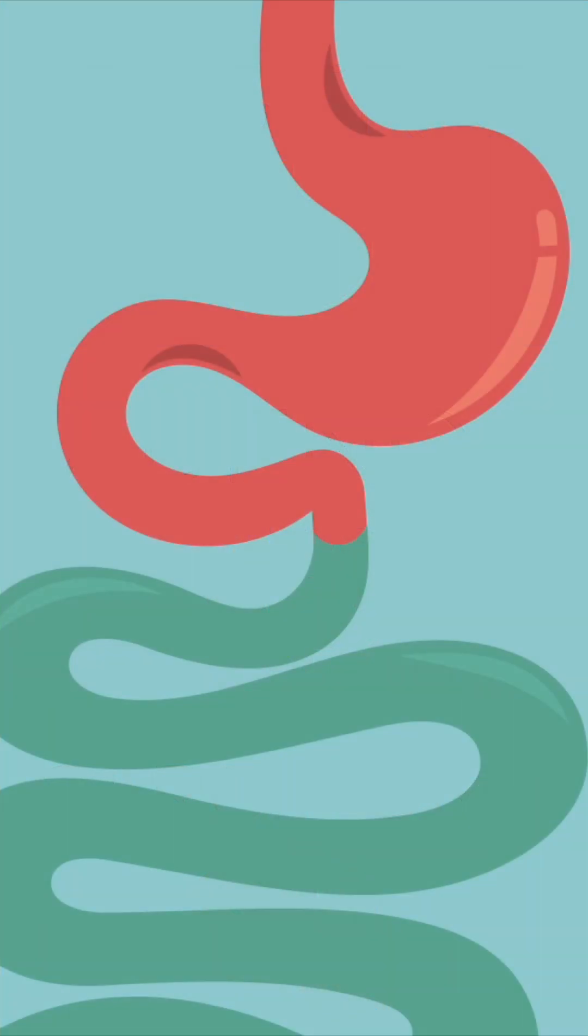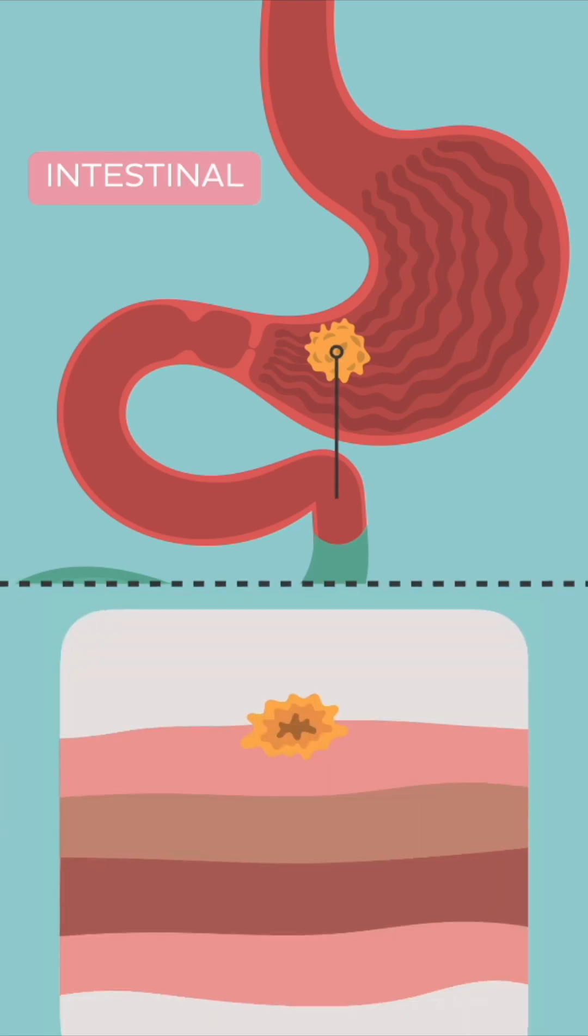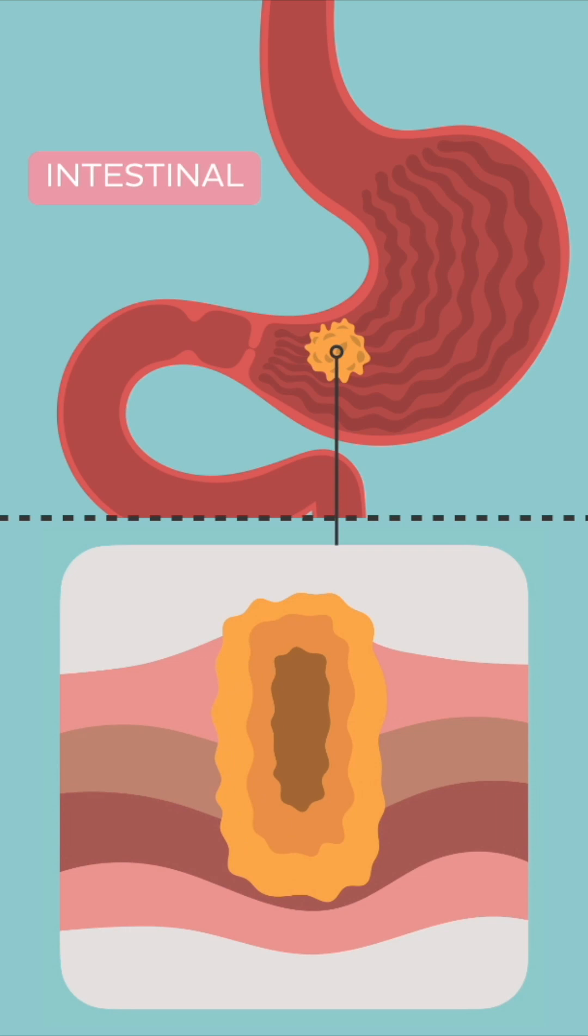There are two types of stomach cancer, intestinal and diffuse. Intestinal cancer is usually a single mass that appears on the lesser curvature or antrum of the stomach. This type usually infiltrates and thickens the stomach wall.